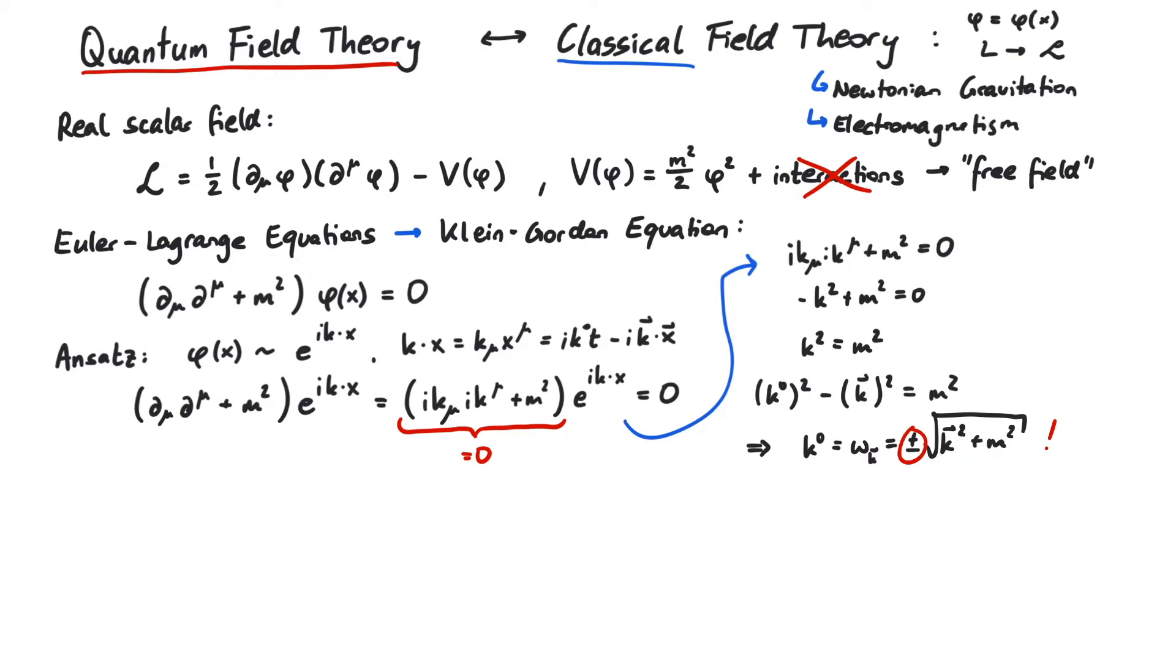Now that we know an exponential ansatz solves the Klein-Gordon equation for one specific k mu, the most general solution is a combination of all possible k mu. Therefore we take the integral over d3k. Why d3k and not d4k? Well k0 is not an independent variable. This looks like some kind of Fourier transformation, so we can interpret a and b as the Fourier coefficients of the field.